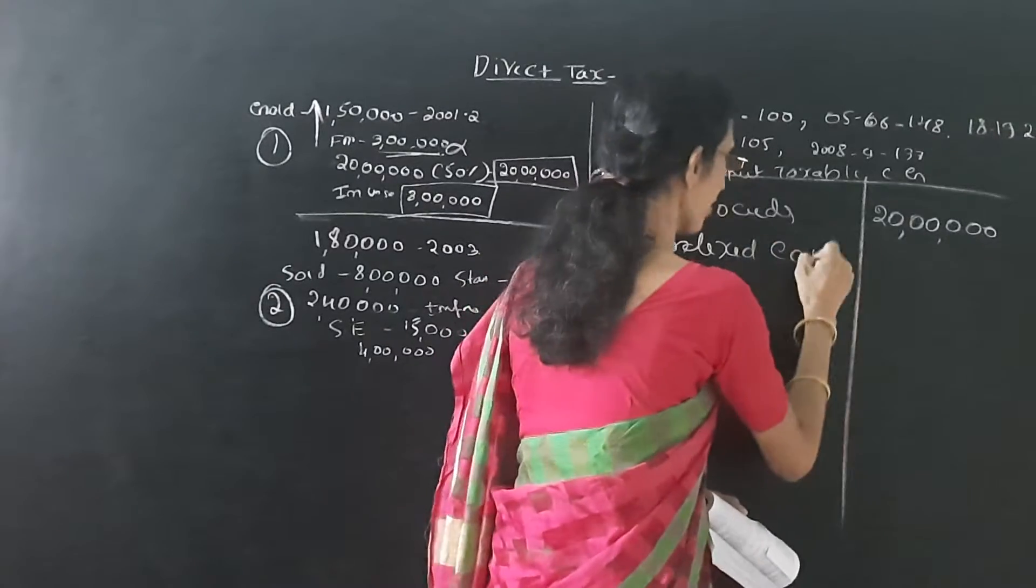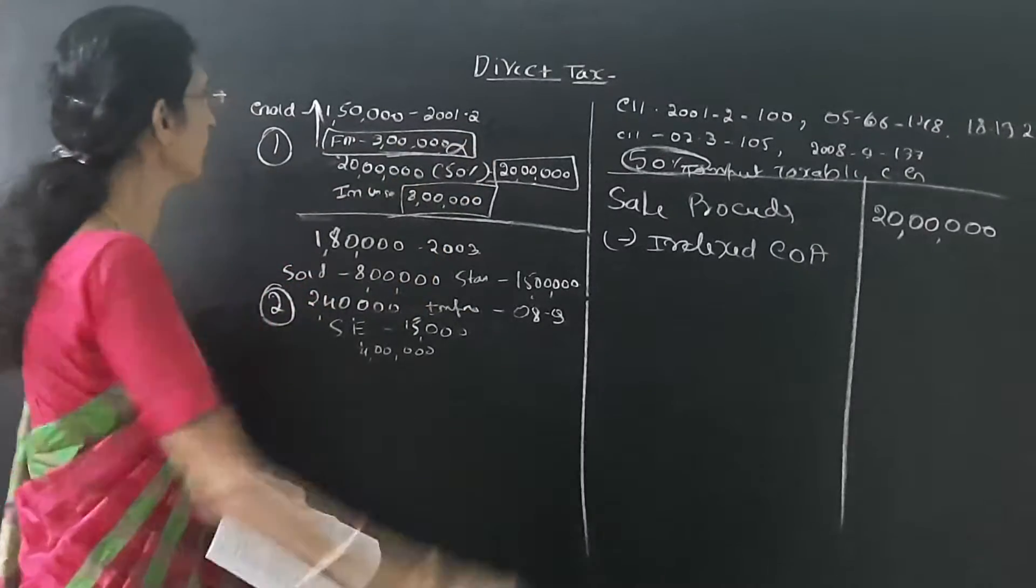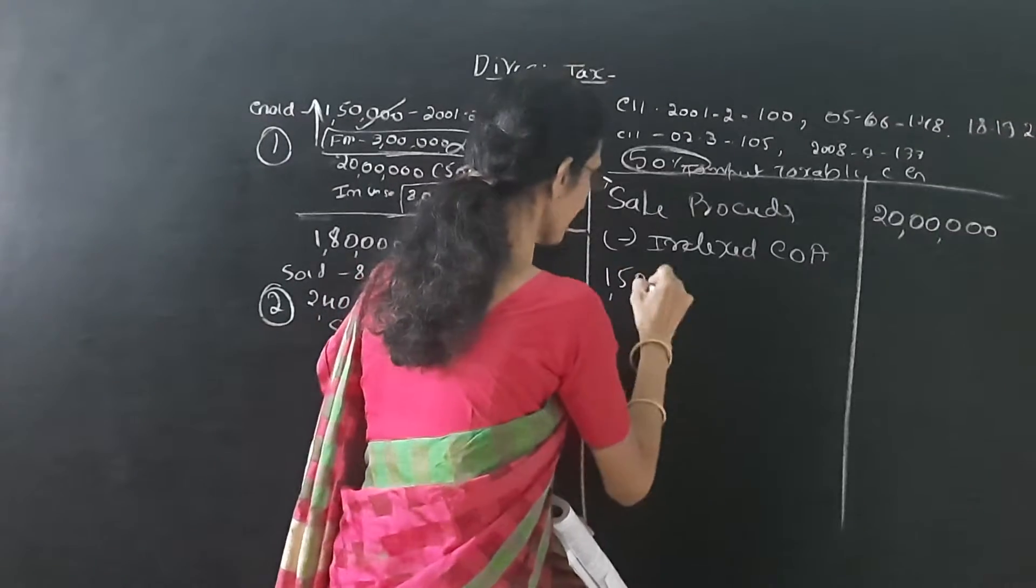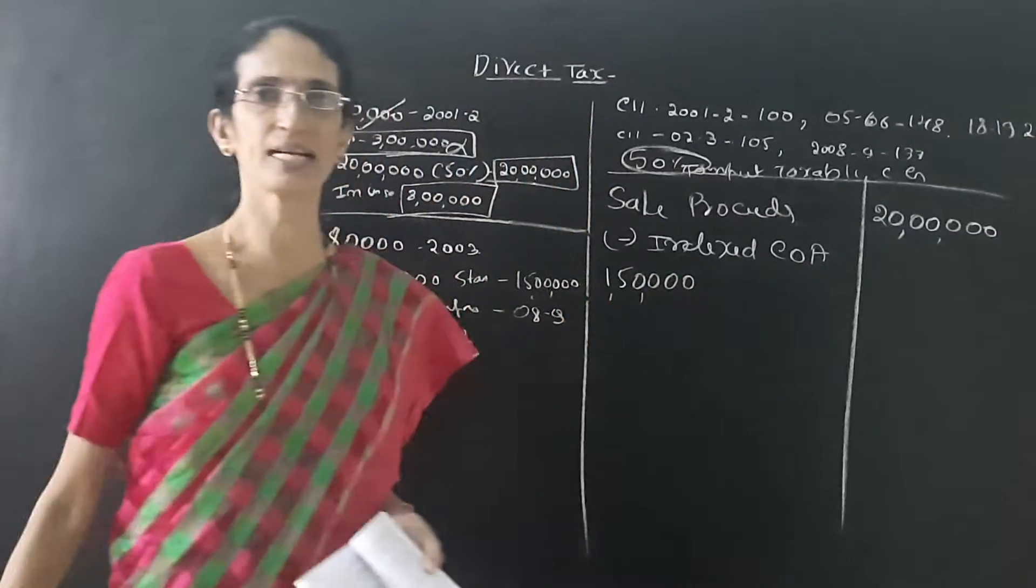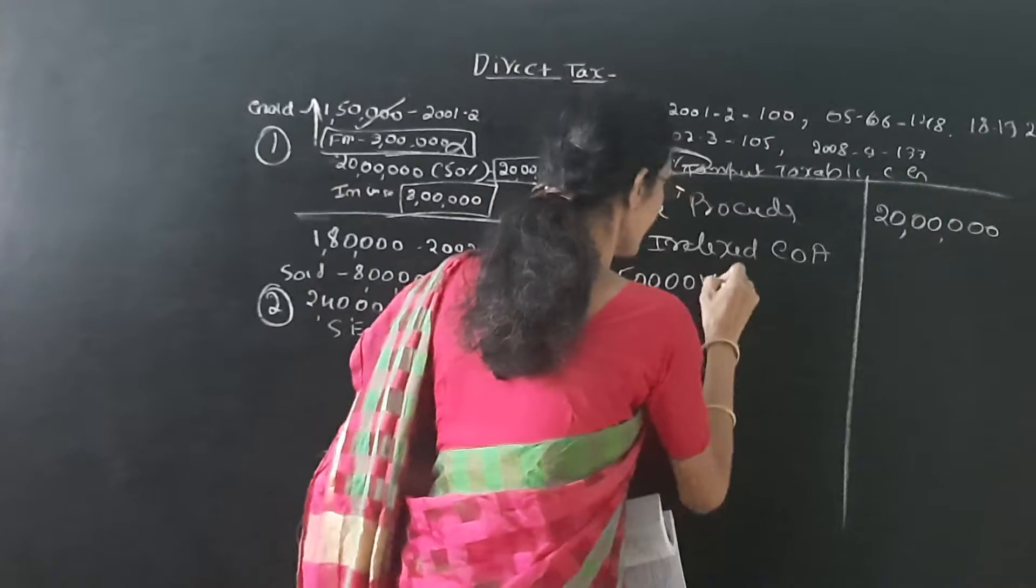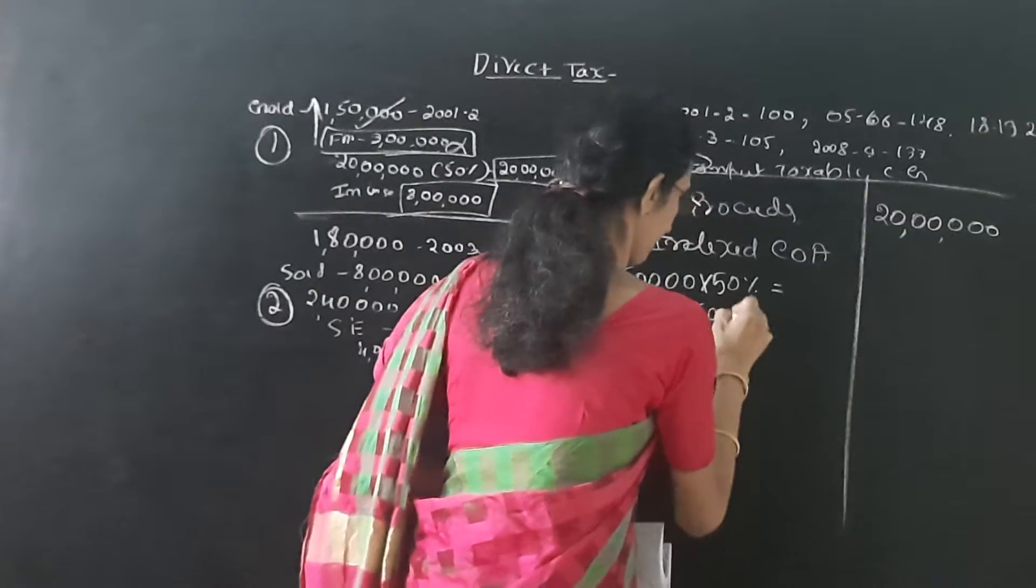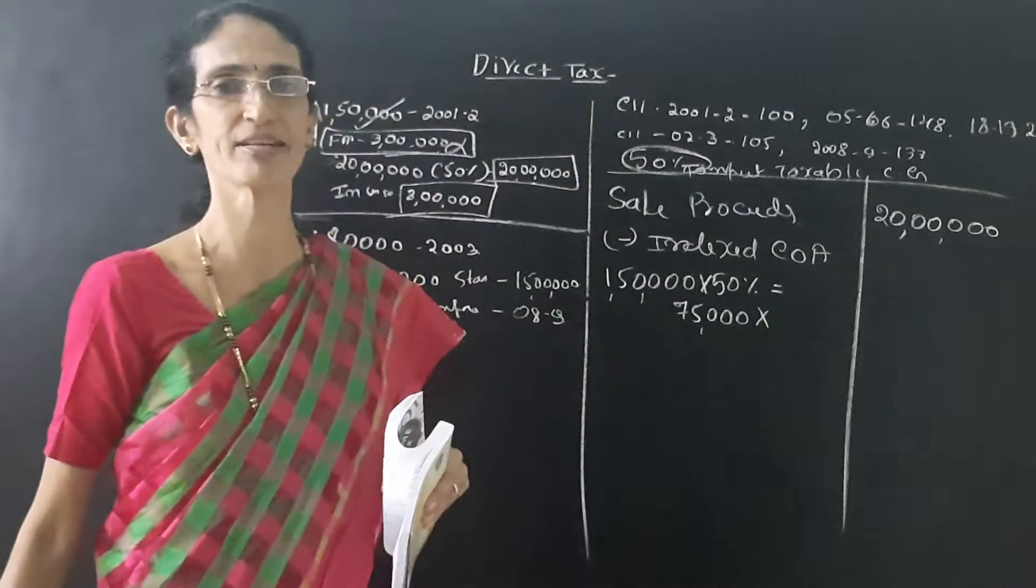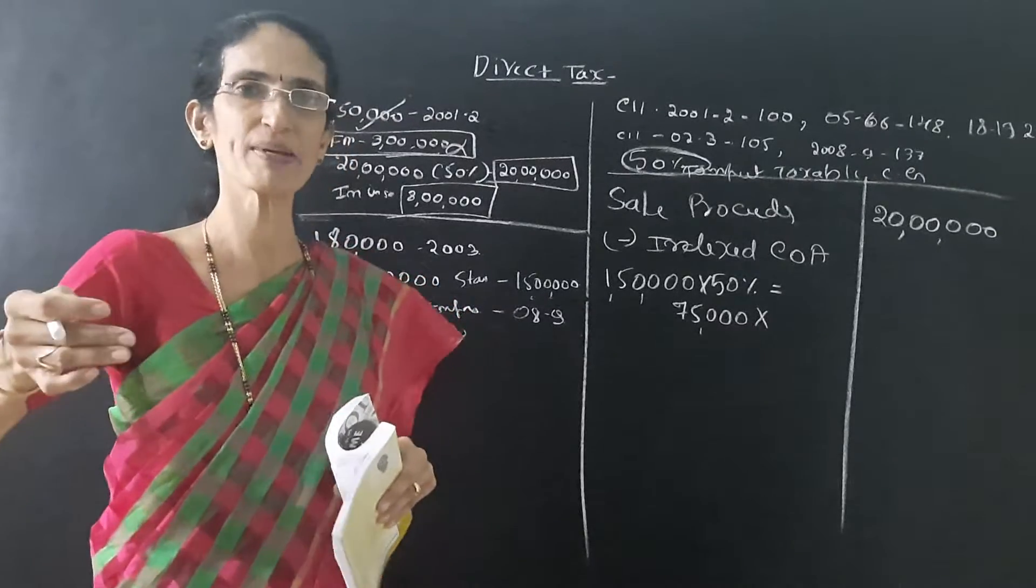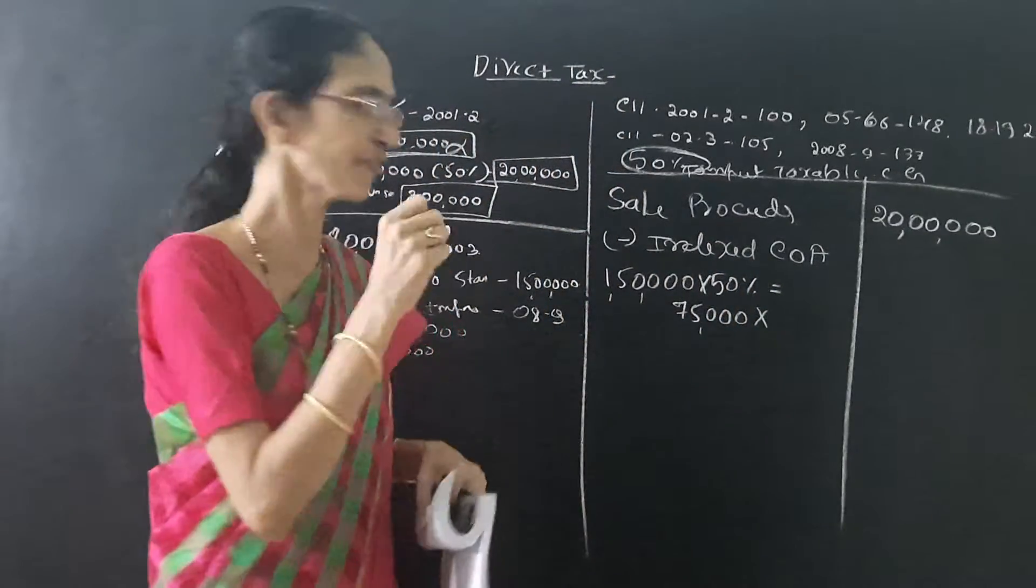Therefore, we have to write indexed cost of acquisition. Once again, the house is gifted, so don't take the fair market value. Take only the cost value. Once again, the cost is Rs. 1,50,000. That means for the whole 100% gold, he given Rs. 1,50,000. But remember, she sold only 50%. So we have to make the cost of purchase for Rs. 75,000.